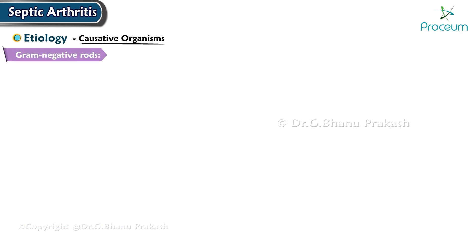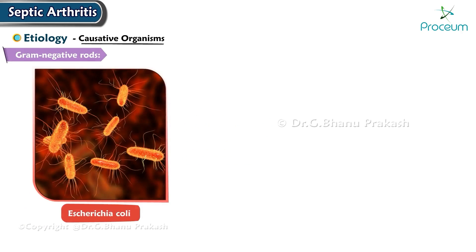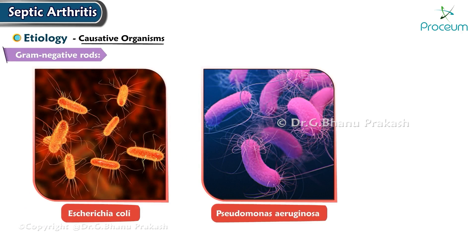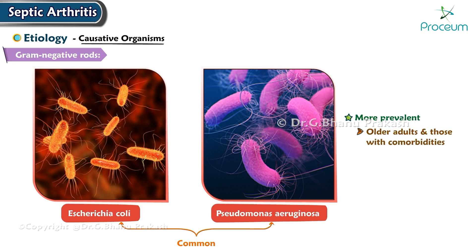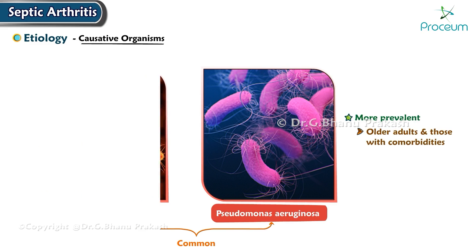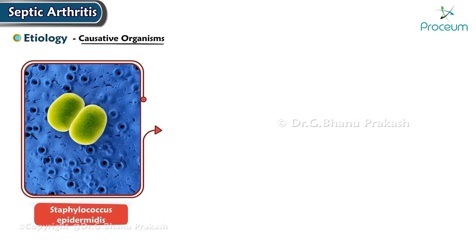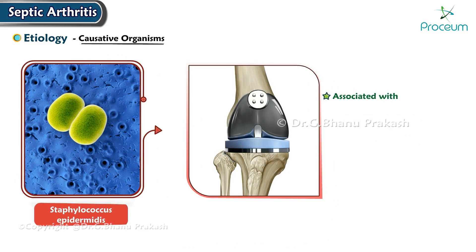Gram-negative rods such as Escherichia coli and Pseudomonas aeruginosa are commonly associated with septic arthritis. Infections caused by gram-negative bacteria are more prevalent in older adults and those with comorbidities. Staphylococcus epidermidis is often associated with prosthetic joint infections and healthcare-associated cases.